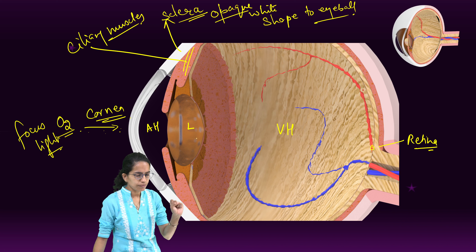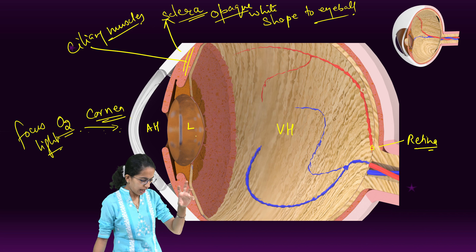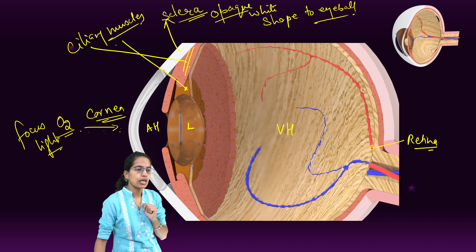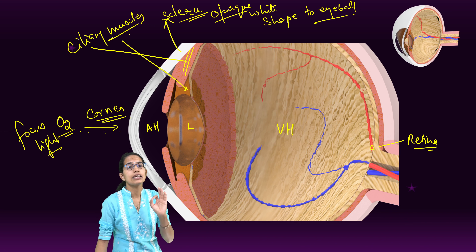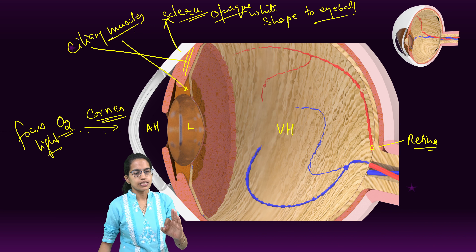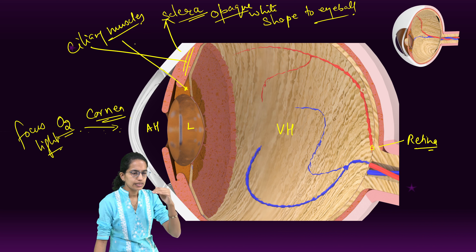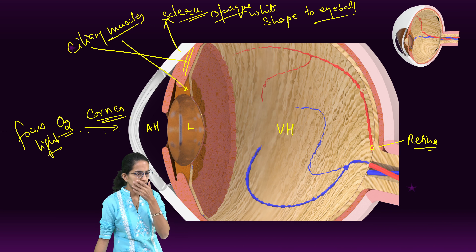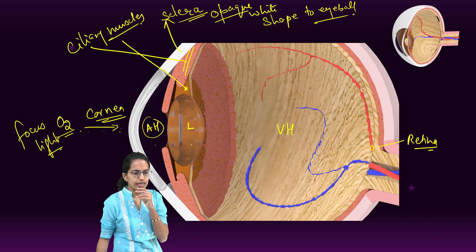Now let's understand the structure of the eye. As you can see, the outermost layer here is the cornea. Now cornea is the transparent clear area of the sclera. The remaining portion is sclera. Now sclera is opaque, it is white, and this gives the shape to the eyeball.